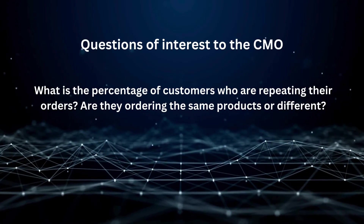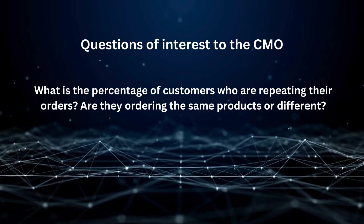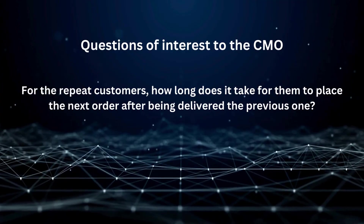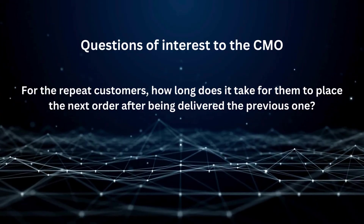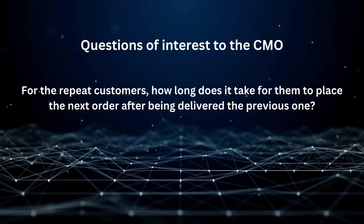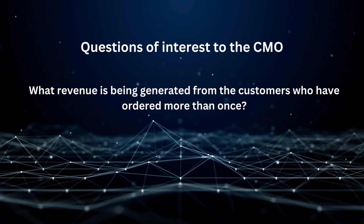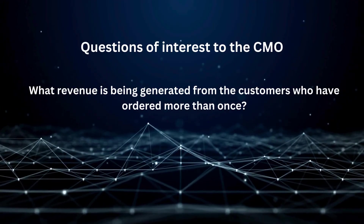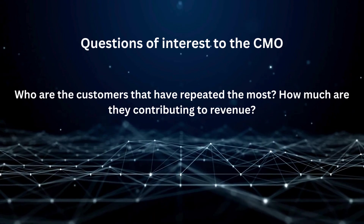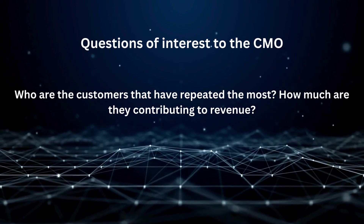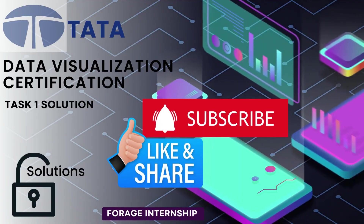Now, the questions of interest to the CMO. The first should be: what is the percentage of customers who are repeating their orders — are their orders for the same product or different? The second should be: for repeated customers, how long does it take for them to place the next order after being delivered the previous one? Third: what revenue is being generated from customers who have ordered more than once? And the fourth: who are the customers that have repeated the most, and how much are they contributing to the revenue?